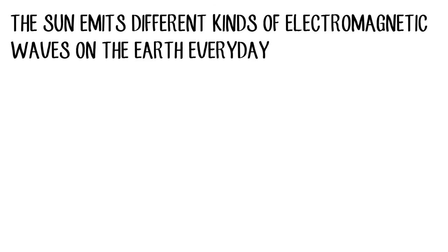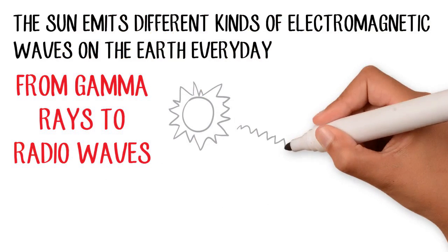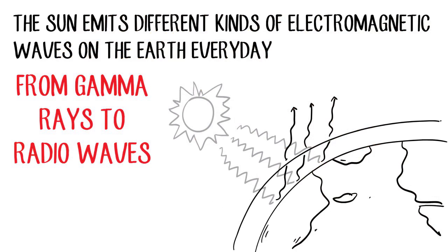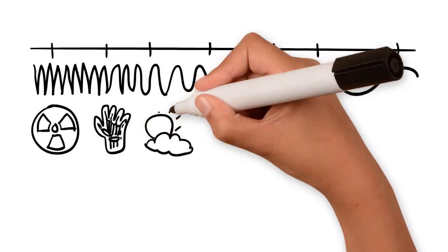The sun emits different kinds of electromagnetic waves on the Earth every day, from gamma rays to radio waves. The ultraviolet is a range of those frequencies.